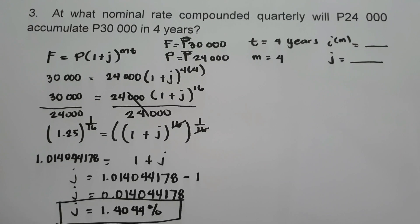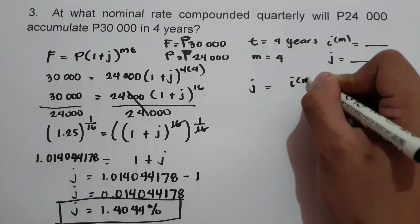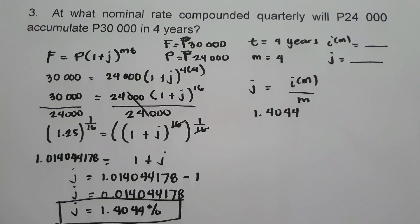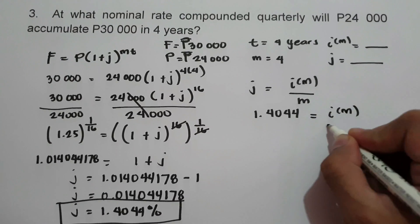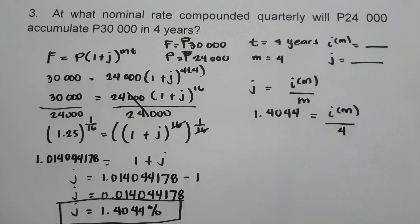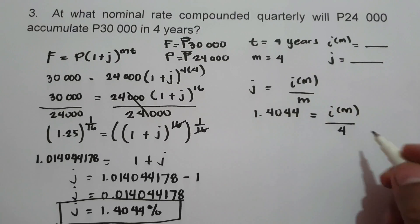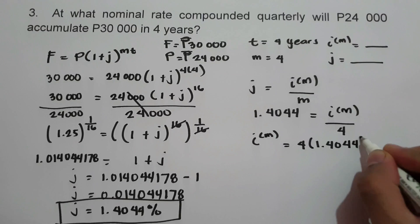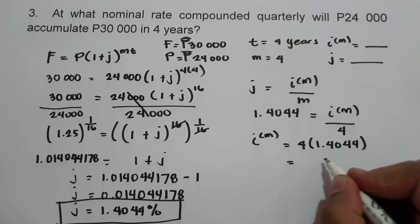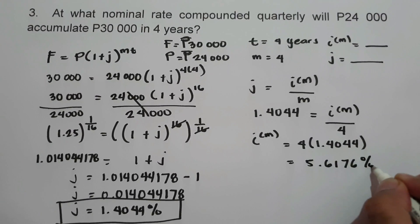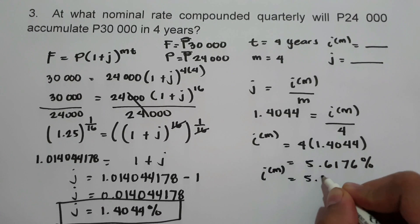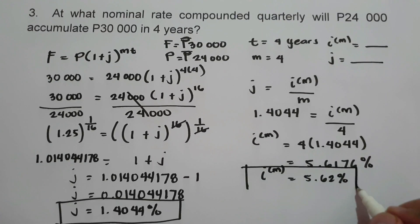Now let us find the value of the nominal rate. Using J equals I^M over M, where J is 1.4044% and M is 4, we multiply 4 by the value of J. So I^M equals 4 times 1.4044%, which is 5.6176%. We can also write our answer as I^M equals 5.62%. This is the value of the nominal rate.